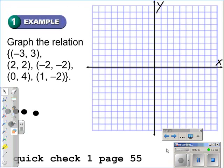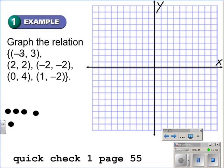In this particular problem or example, we're being asked to graph the relation. By definition, a relation is a set of ordered pairs. And we can see we have one, two, three, four, five ordered pairs.